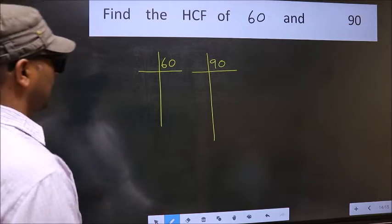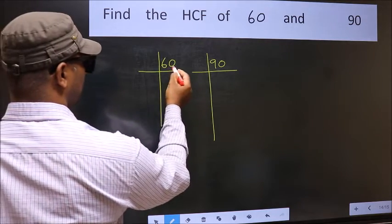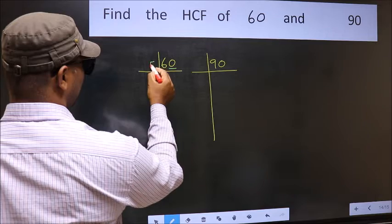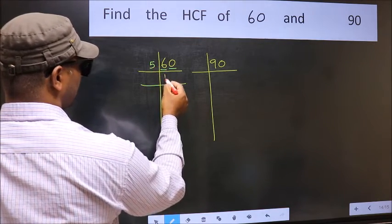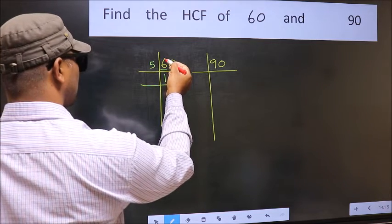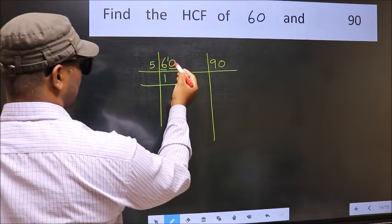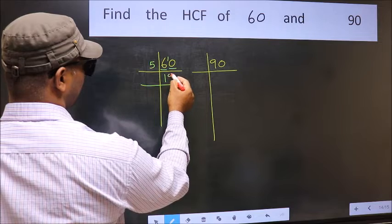Next, in this number, last digit is 0 so take 5. First number 6. A number close to 6 in 5 table is 5 once 5. 6 minus 5 is 1. 1 carried forward 10. When do we get 10 in 5 table? 5 times 2 is 10.